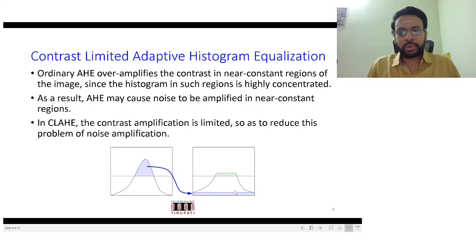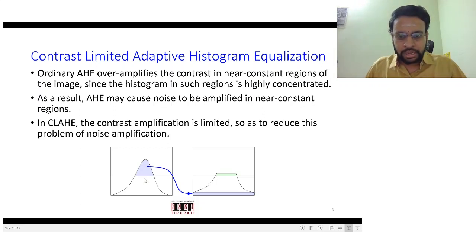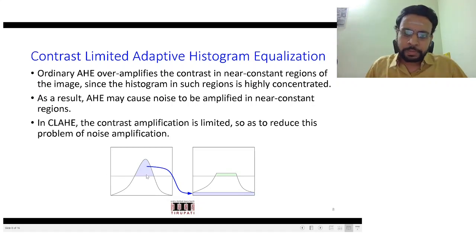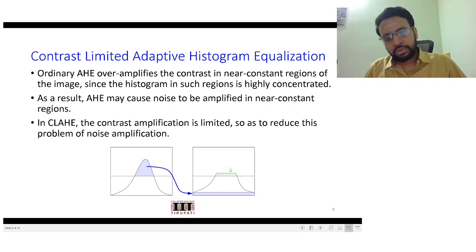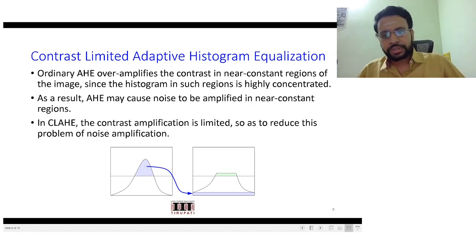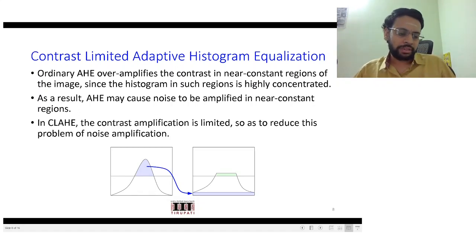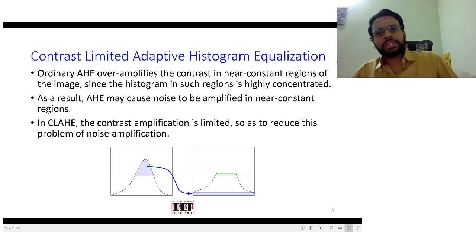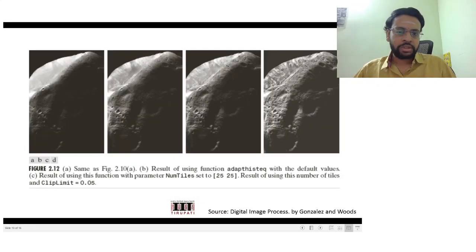What could happen again is that pixels with intensities that were raised might again cross the upper value for the PDF you have decided. So you again take those values and uniformly redistribute them across all intensities. You do this iteratively until there is no intensity value for which the PDF is greater than the predetermined maximum value. Then on this modified histogram you apply histogram equalization — and this can be done locally, giving you contrast limited adaptive histogram equalization.